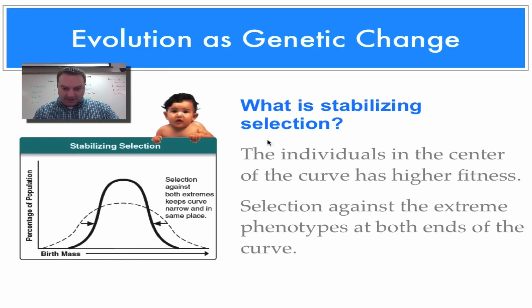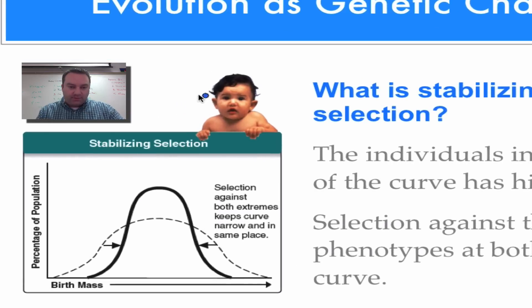In stabilizing selection, the individuals in the average or the center of the curve have the higher fitness. And what this is is that you have selective pressures against both extremes. And we see this in human birth weight. Okay, so over here we got this little baby. And in humans, the average-sized baby has the higher fitness. So down here we have small babies. They have a low birth weight. They have a hard time surviving after birth if they're born too tiny. And then over here we have big babies. And these guys are just, they're kind of too big to be born without complications to both them and the mother.